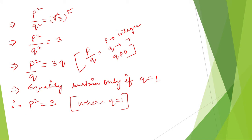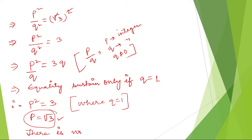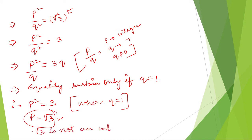Now, tell me any number whose square is 3 — is it possible? Can any integer squared equal 3? There is no such integer. Root 3 is not an integer. We need p to be an integer, but p is not an integer.